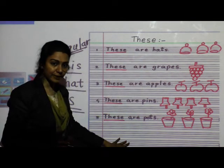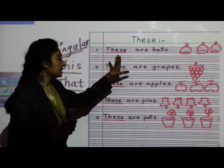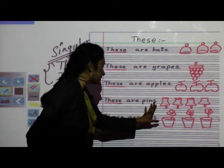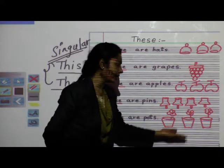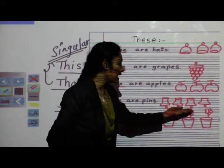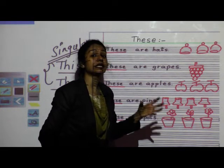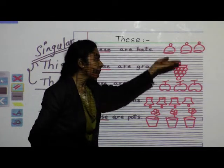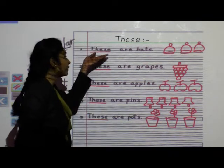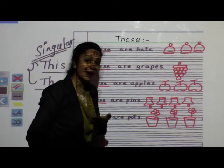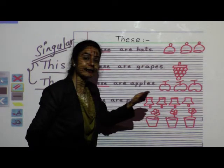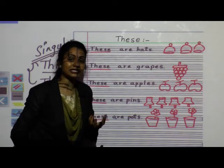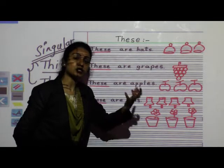So these are the examples of T-H-E-S-E: these are hats, these are grapes, these are apples, these are pins, these are pots. In all these examples, the things are near to us and more than one in quantity. Jo cheeze hamare paas hain aur unka description batana ho, tab 'these are' bolna hai.